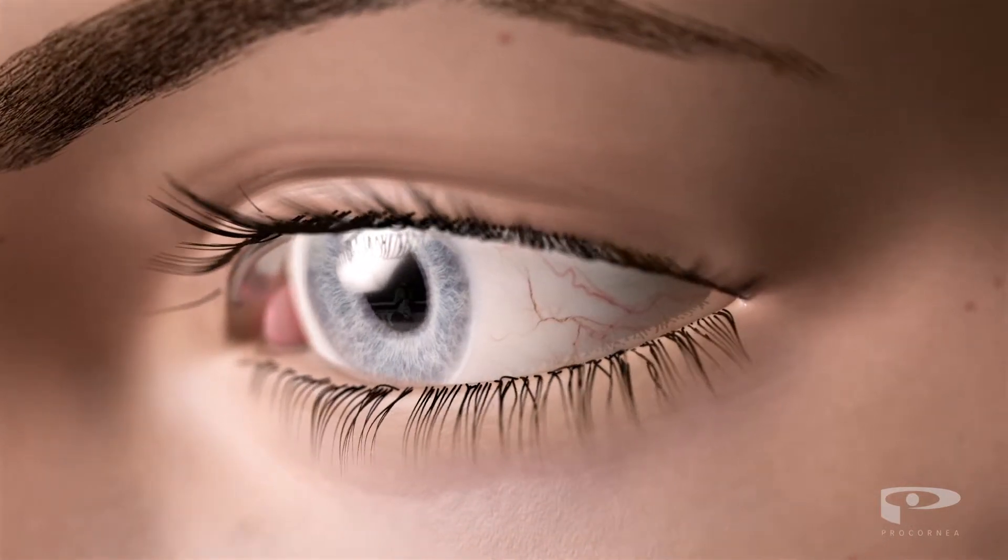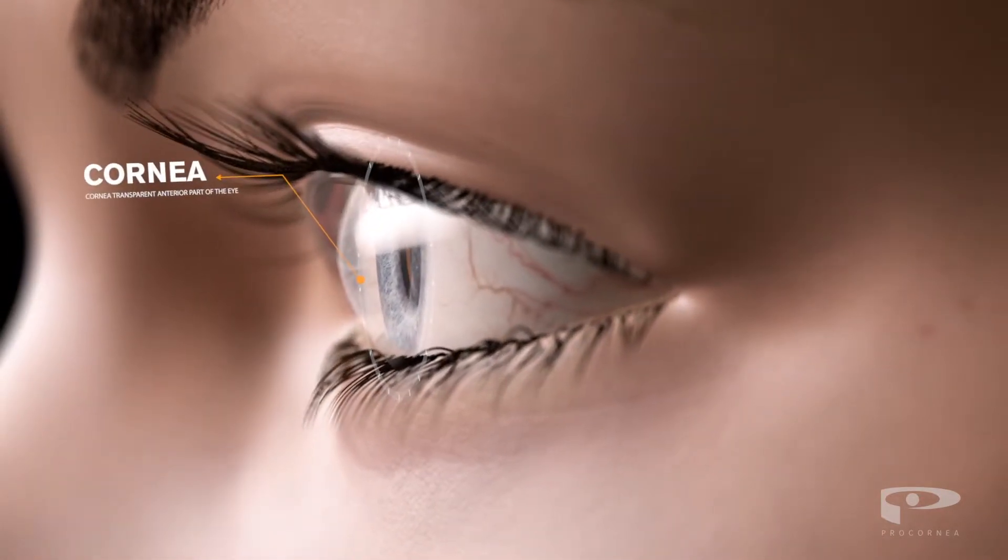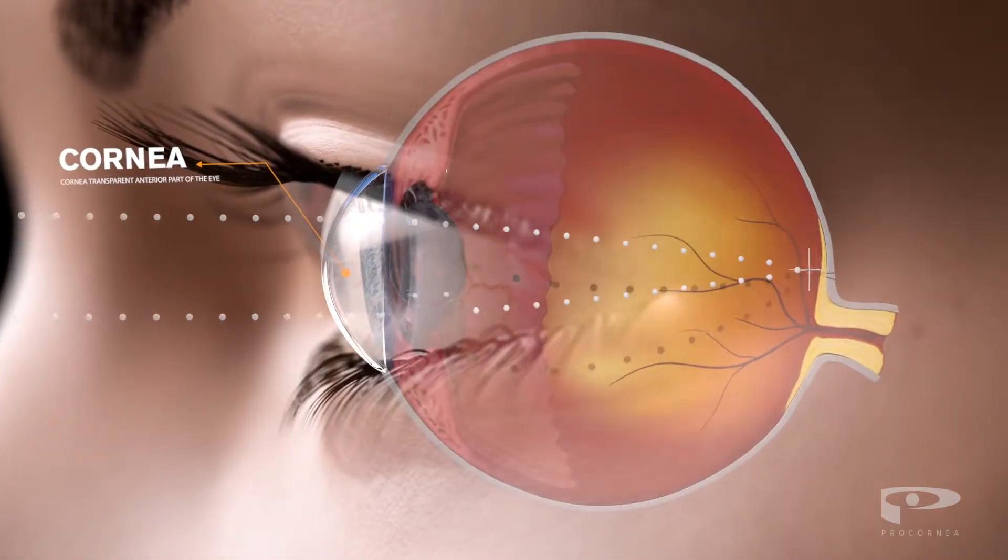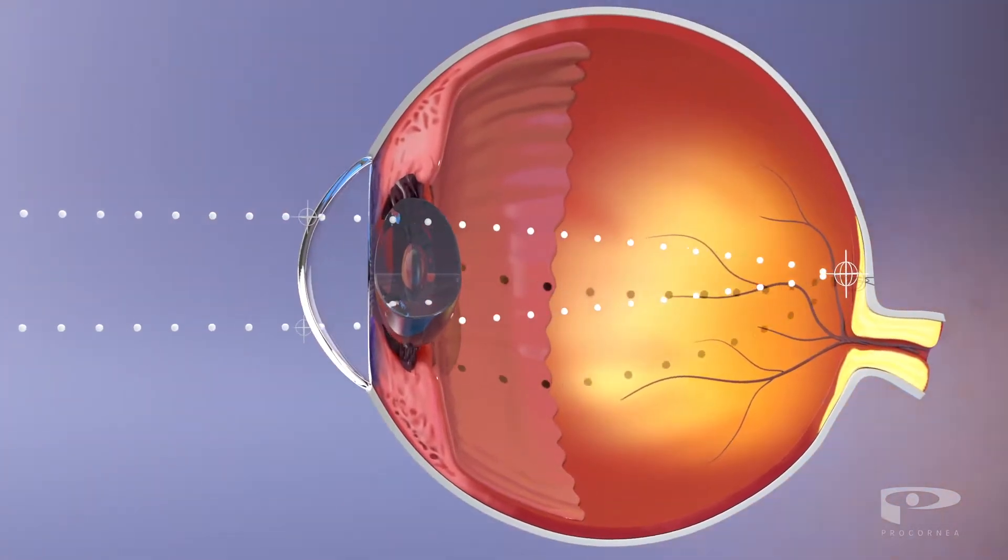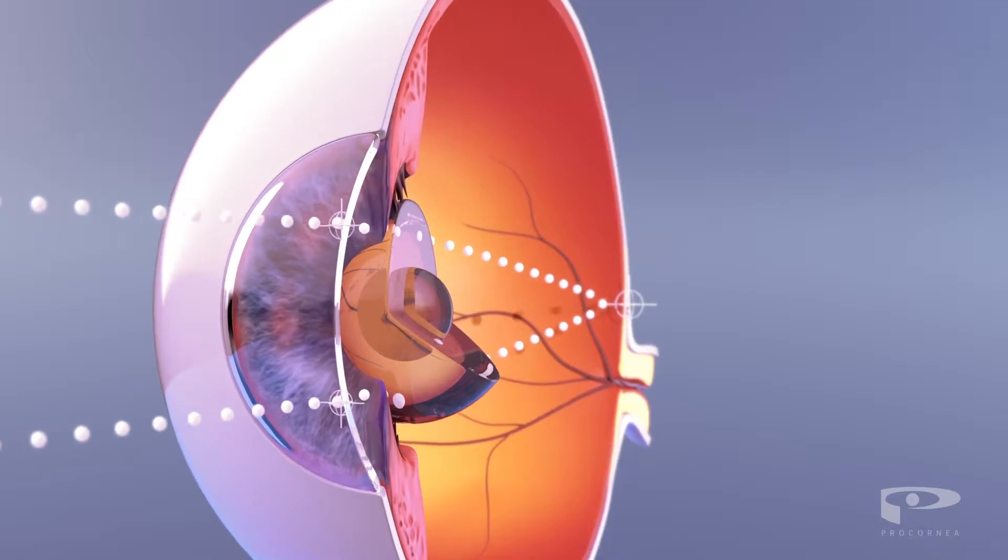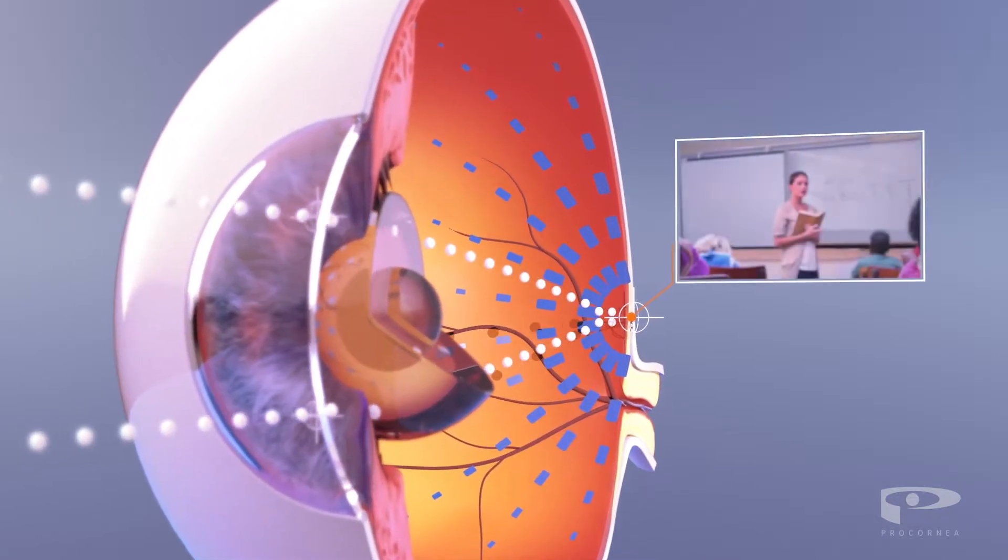When we look at something, light enters the eye through the cornea. The cornea has a curved lens-like shape, which helps to focus light directly on the retina at the back of the eye. This forms a clear, sharp image.